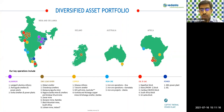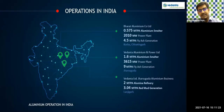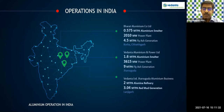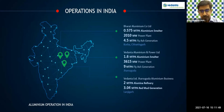For the aluminium business in India, we have three divisions. First is Bharat Aluminium Company (BALCO), situated in Korba, Chhattisgarh, with a capacity of 0.575 million metric tons annually, associated with a 2,000 megawatt power plant that generates around 4.5 million tons of fly ash every year.